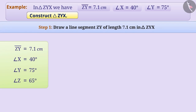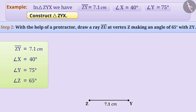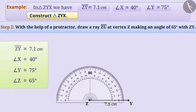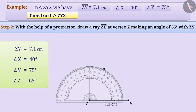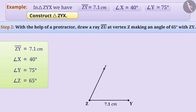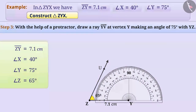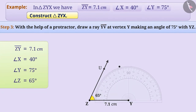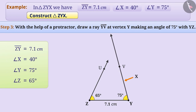Step 1: Draw a line segment ZY of length 7.1 cm. Step 2: With the help of a protractor, we will construct an angle of 65 degrees at vertex Z, drawing a ray at vertex Z making an angle of 65 degrees with ZY. We label the ray ZU. By the given condition, X must be somewhere on the ray ZU. Step 3: With the help of a protractor, we will construct an angle of 75 degrees at vertex Y. We draw a ray YV making an angle of 75 degrees with YZ. By the given condition, X must be on the ray YV also.